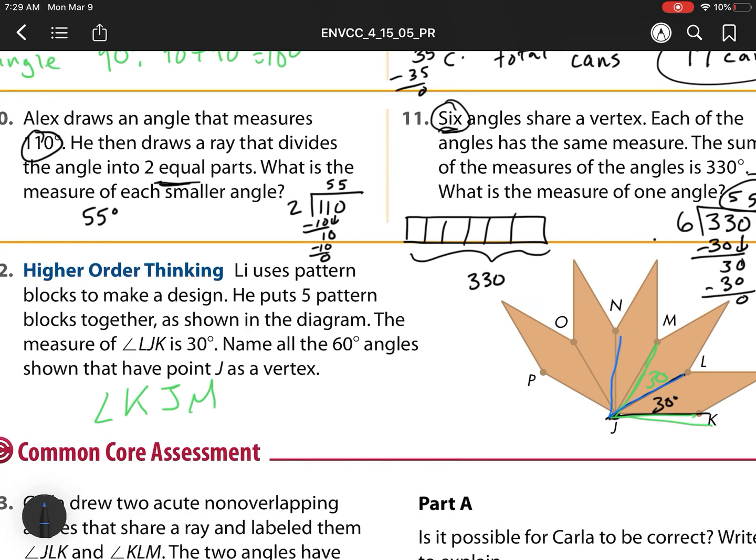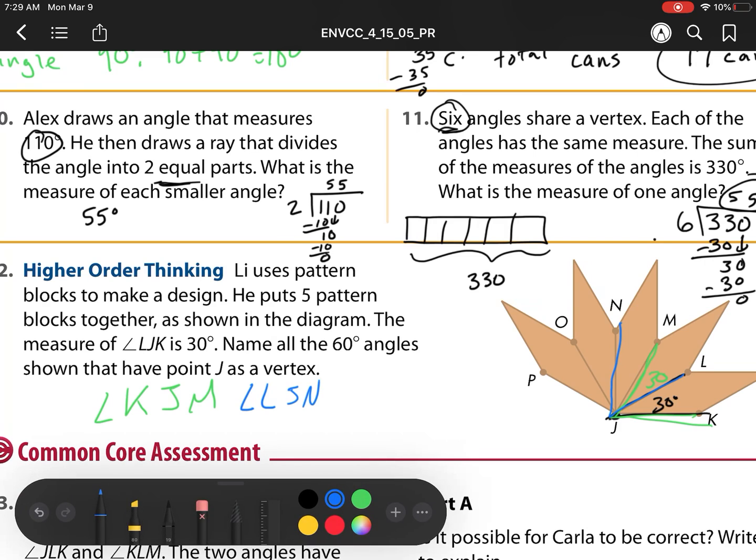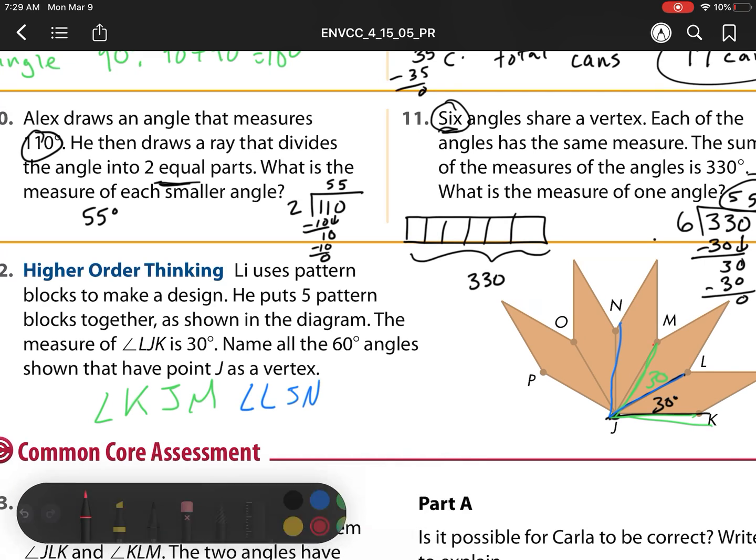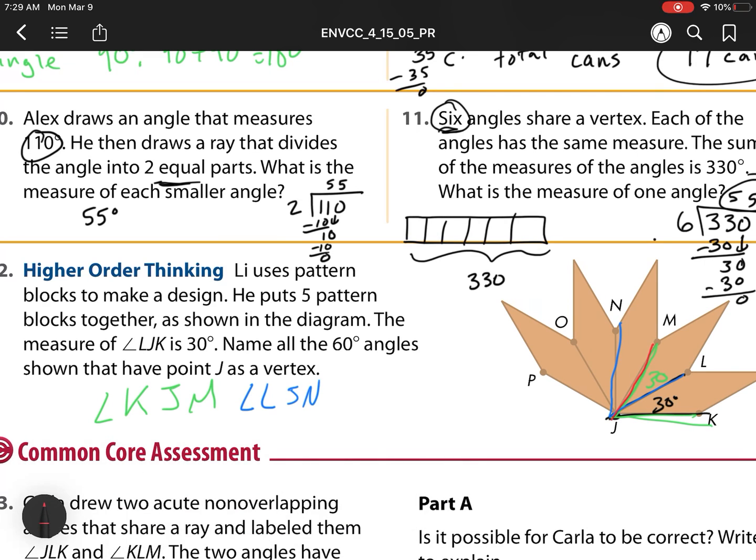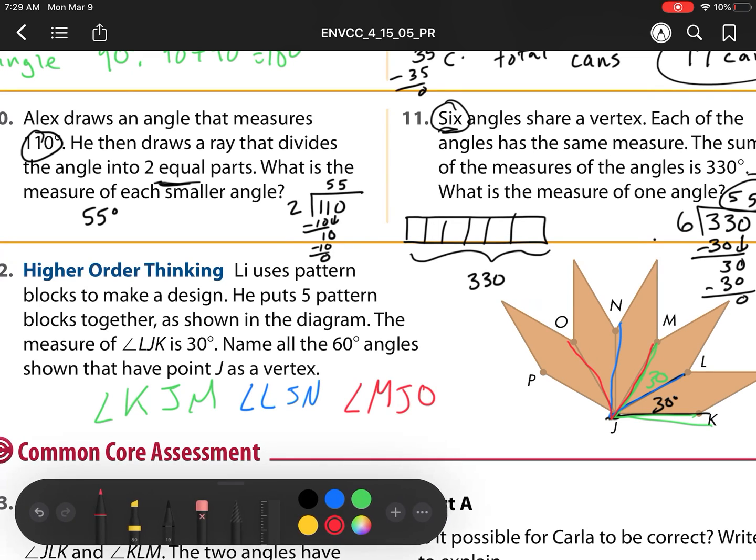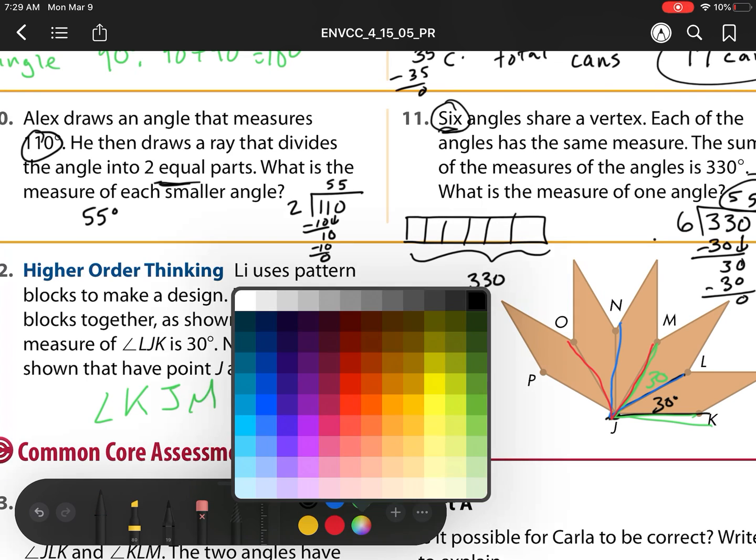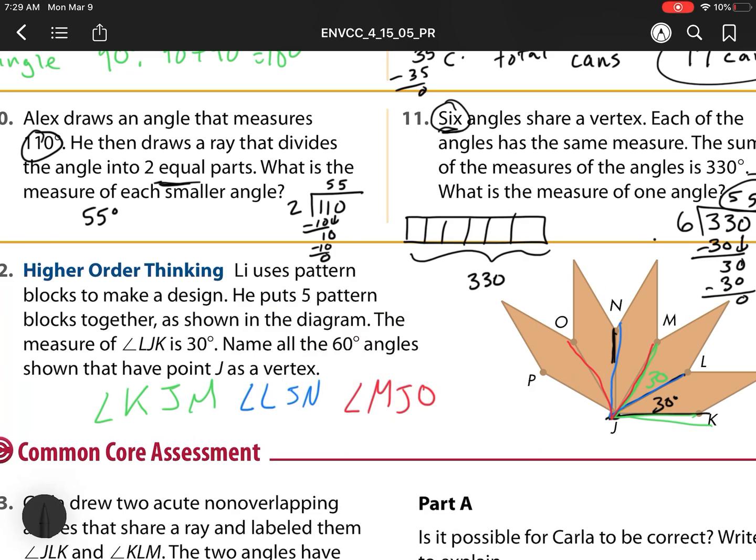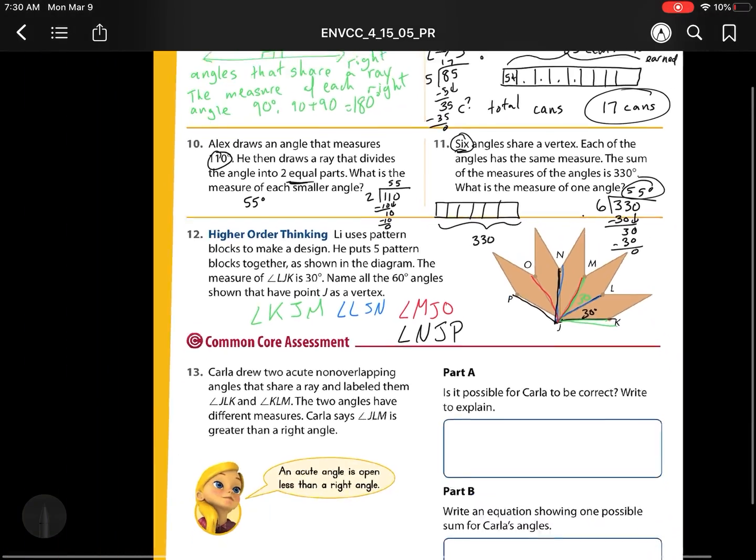So what other groups of two can we get? We can start at L, go to J, and go to N. So angle LJN. What other groups of two can I make? Now I can start at M, go MJO. So angle MJO. And can I make any other groups? Yes, I can make one more. So I can start my next one over, which is N, go to J, and then go to P. So angle NJP is my last one.